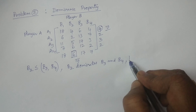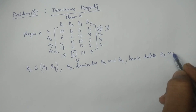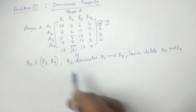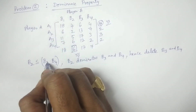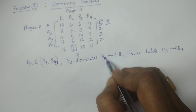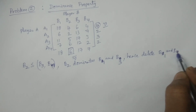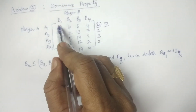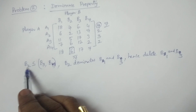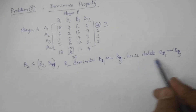Hence, B2 dominates B3 and B4 of Player B — so delete B3 and B4. Now, I am comparing B2 with B1 and B3. B2 is less than or equal to B1 and B3. Hence B2 dominates B1 and B3. Therefore, delete B1 and B3.